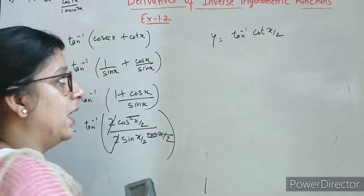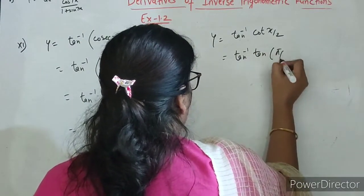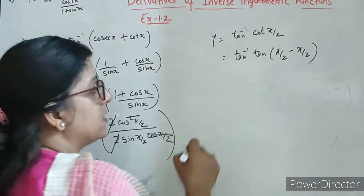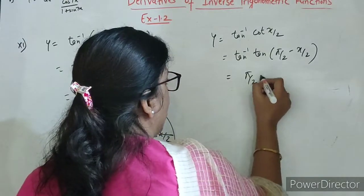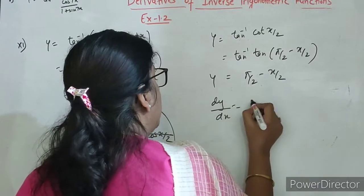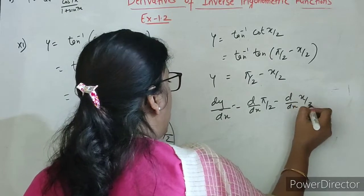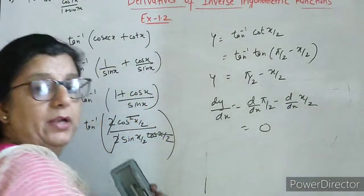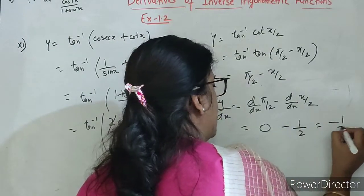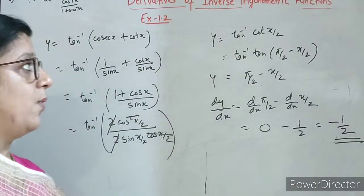Students, kitne questions mein humne same problem face kara hai — tan ke saath tan aana chahiye but nahi aa raha, yaha par cot aa raha hai. Toh cot ko hum change kar dhenge tan mein: pi by 2 minus theta. Now tan inverse tan x ki property that is x. So yeh ho gaya y equals to pi by 2 minus x by 2. Dy by dx: derivative of pi by 2 is 0, x by 2 ka derivative 1 by 2. Final answer is minus 1 upon 2.